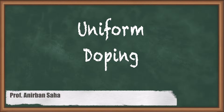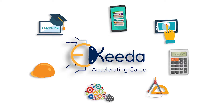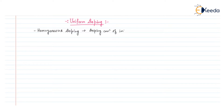Hello friends, in this video we are going to discuss Uniform Doping in Semiconductors. Uniform Doping means Homogeneous Doping — this is another name for Uniform Doping. Homogeneous means that the doping concentration of impurity atoms will be constant at every point inside the semiconductor.